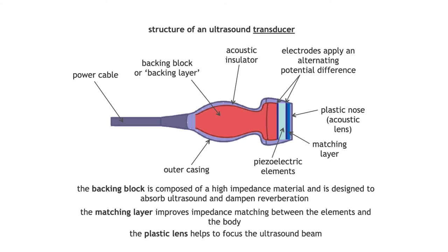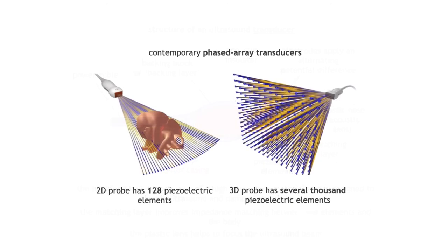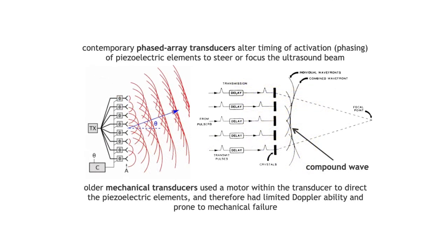Modern transducers are referred to as phased array transducers. Phased array simply means a timed arrangement of piezoelectric elements — the release of ultrasound is carefully timed to aid focusing. A typical 2D probe has about 128 piezoelectric elements, while a 3D probe has several thousand. The timed activation of elements creates a combined wavefront that can be steered in the desired direction or focused at a point.